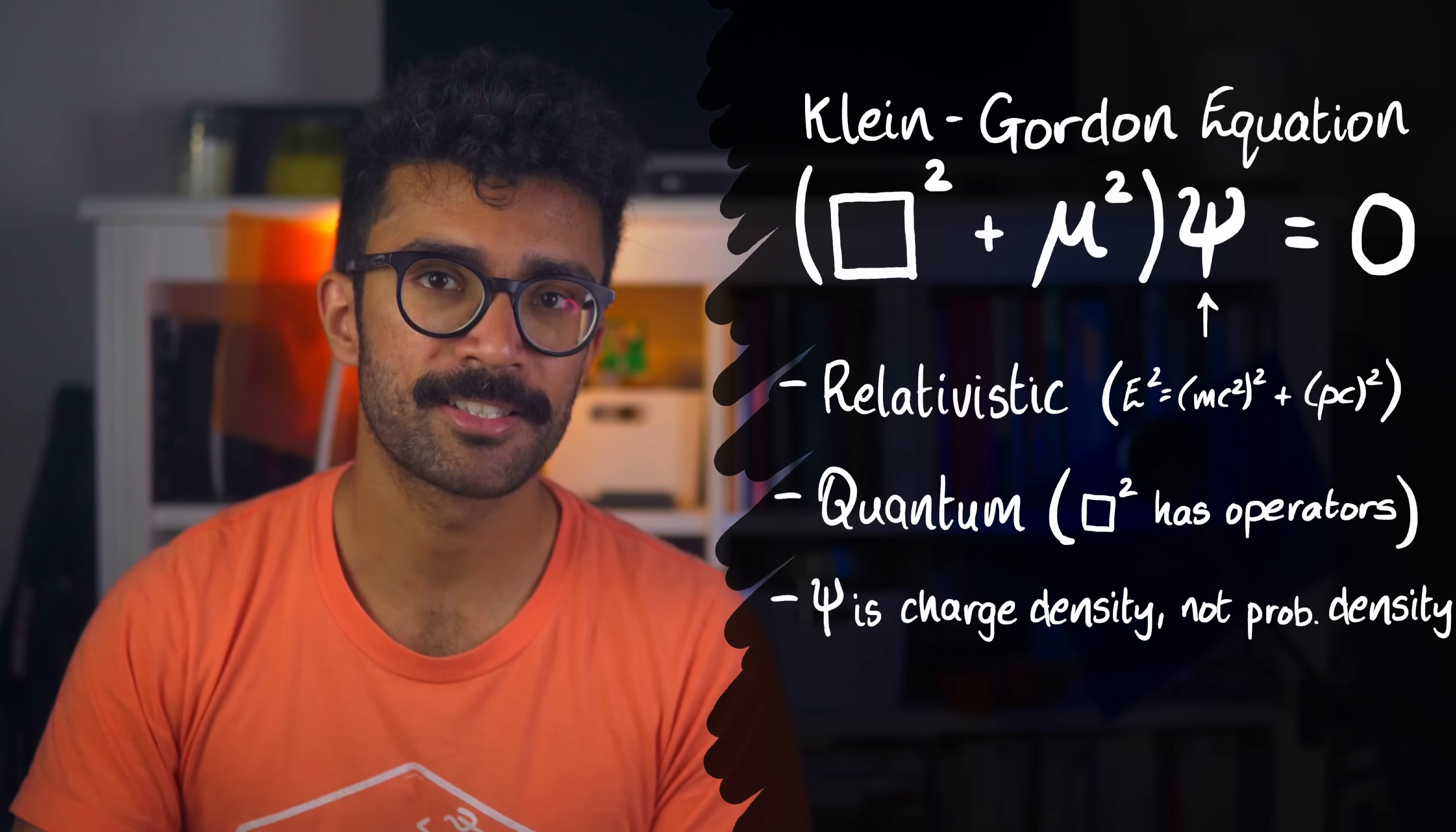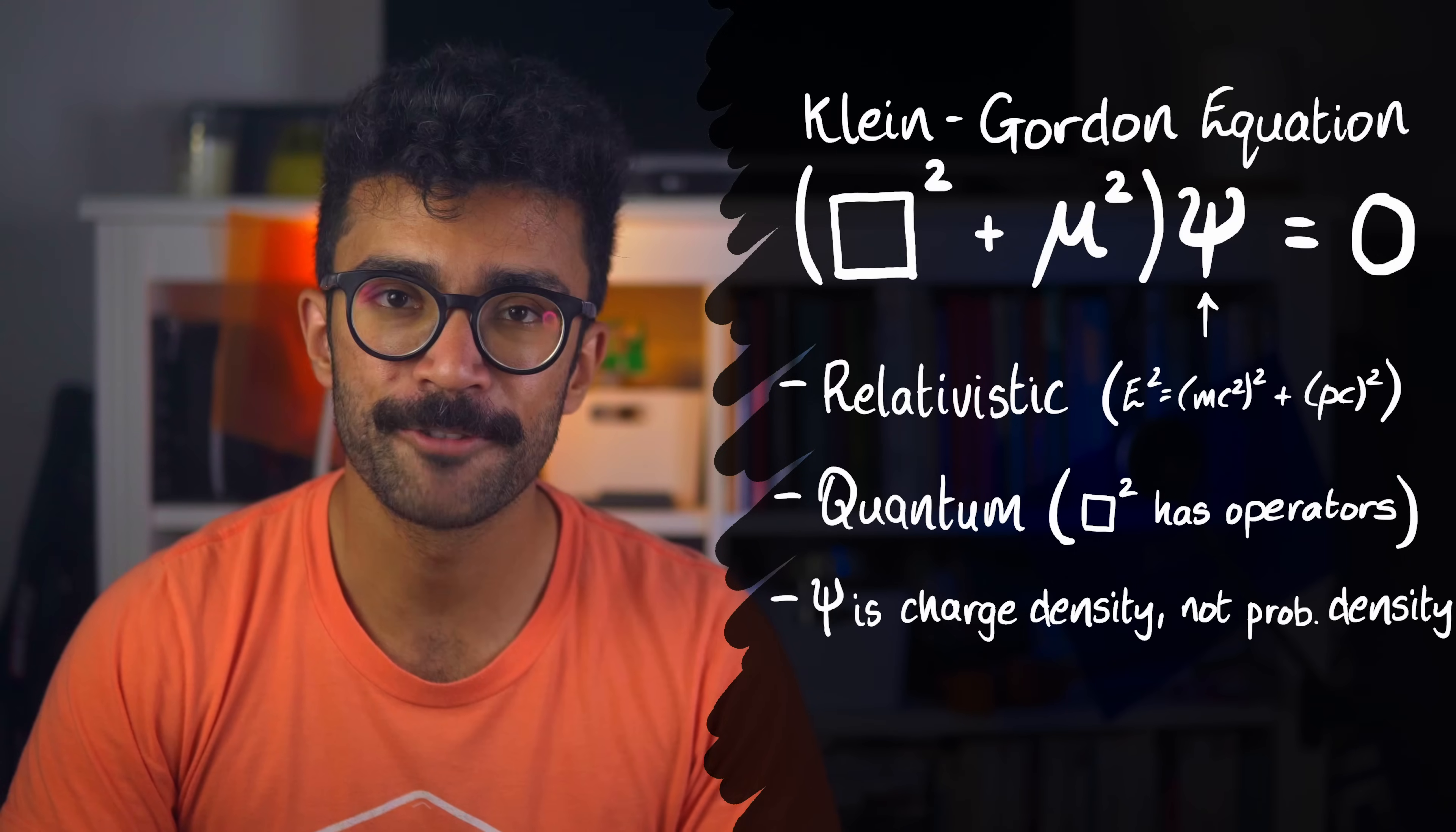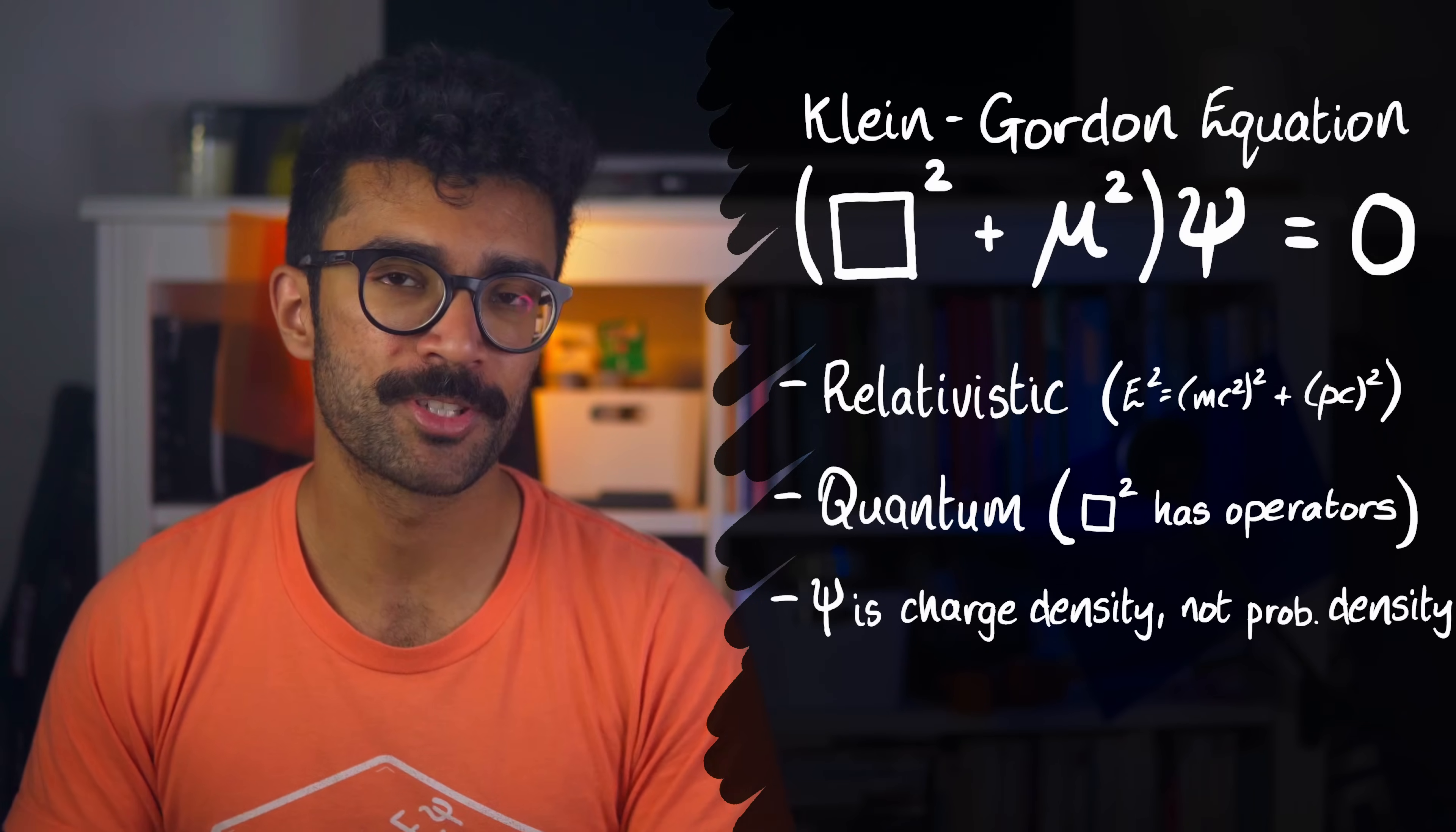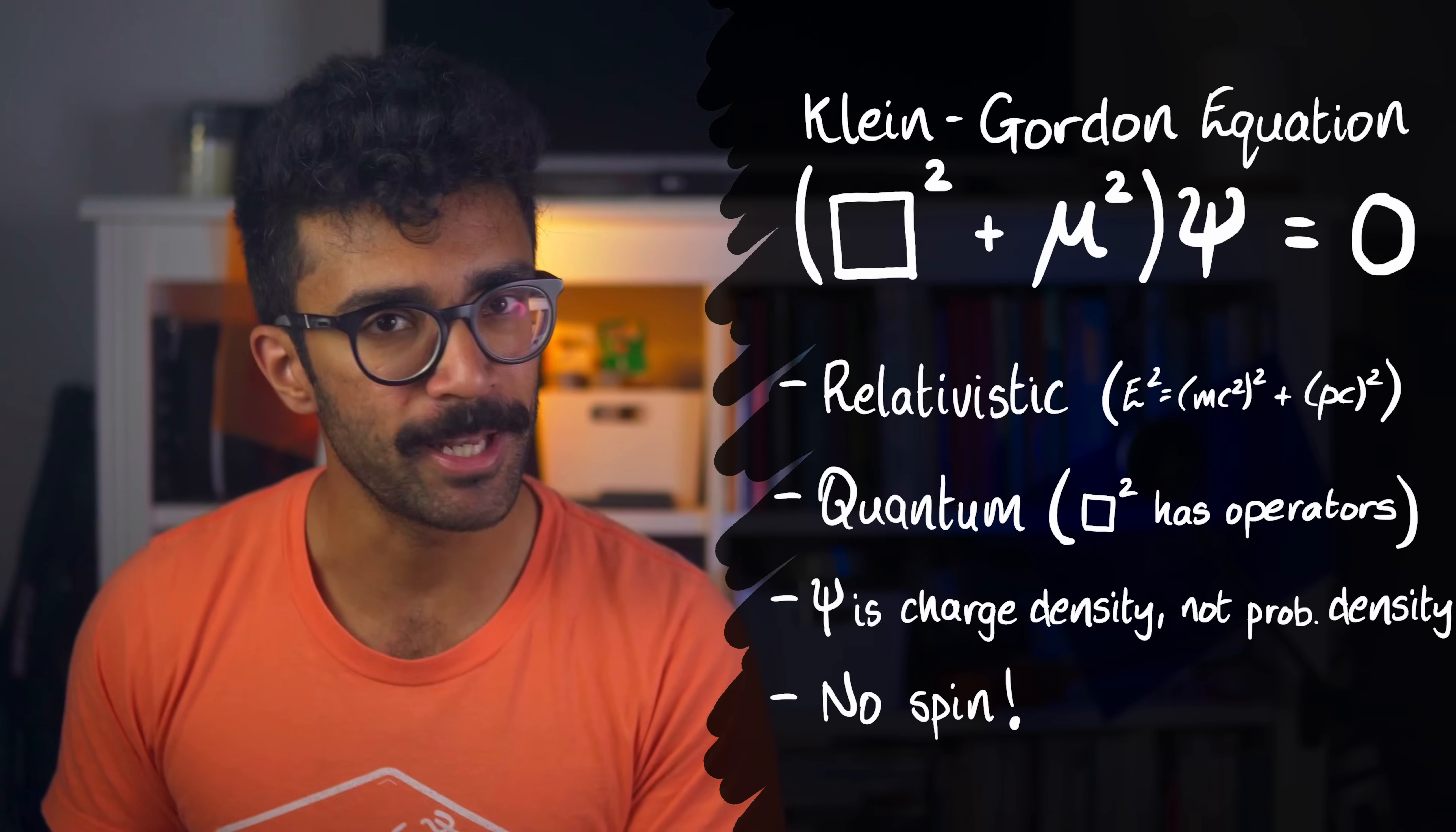And this equation tells us about the relativistic and quantum behavior of particles with positive, negative, or zero charge. Again, I'll discuss this more in a future video on the Klein-Gordon equation, so please do be sure to subscribe if you're interested in that. Now, here's the interesting thing about the Klein-Gordon equation.